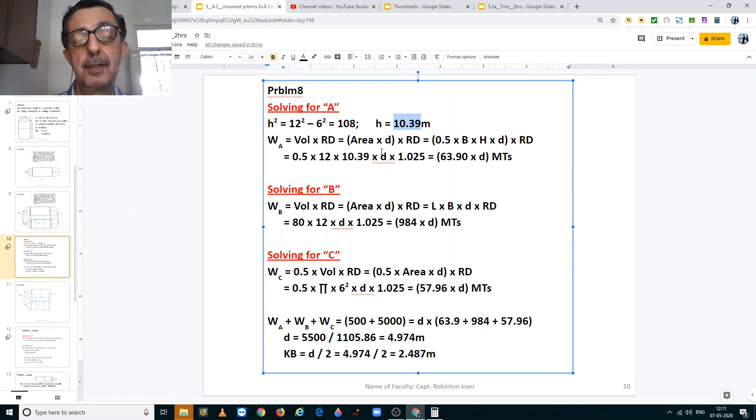Likewise, we solve for the B section. The B section displacement is equal to volume into relative density. And we know volume is equal to area into the draft. Thus we have displacement equal to length into width, the draft is d, and the relative density of the water in which it is floating.